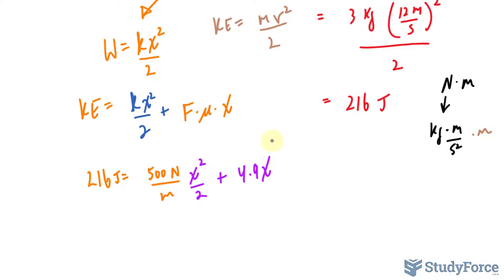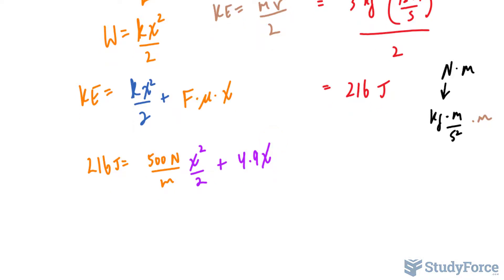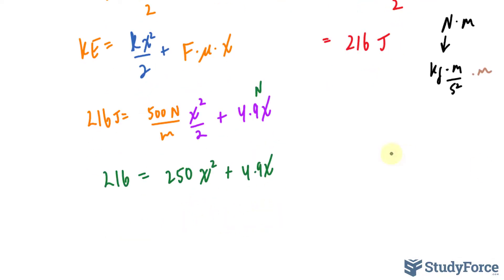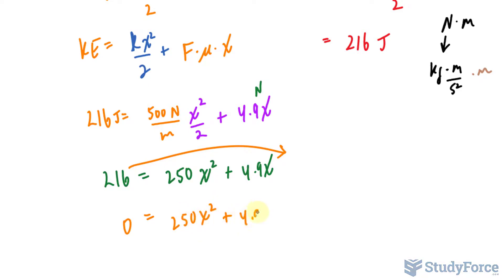Let's simplify. We have 216 equals 500 divided by 2 — that's 250 — times x squared, plus 4.9x. This equation is a quadratic because we have a power of 2, so we'll use the quadratic formula. Rearranging: 250x squared plus 4.9x minus 216 equals zero.